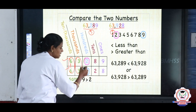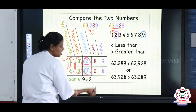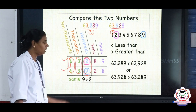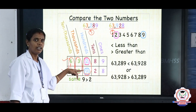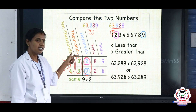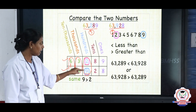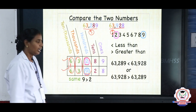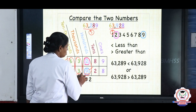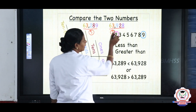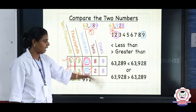Now we compare the next digit in the hundreds place. Here it is 2 (hundreds) and this one is 9 (hundreds). Which is greater among 2 and 9? Deepak, which is greater — 2 or 9? Yes, 9 is greater. So 63,928 is greater than 63,289.